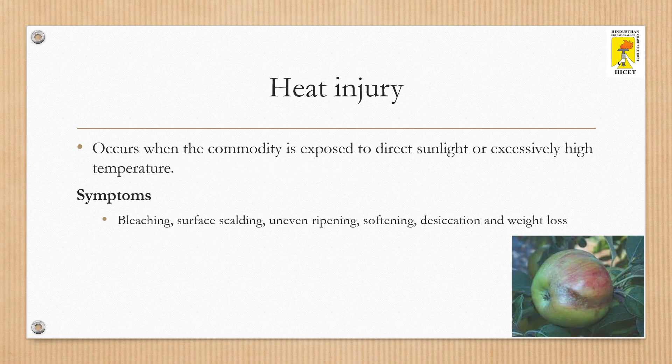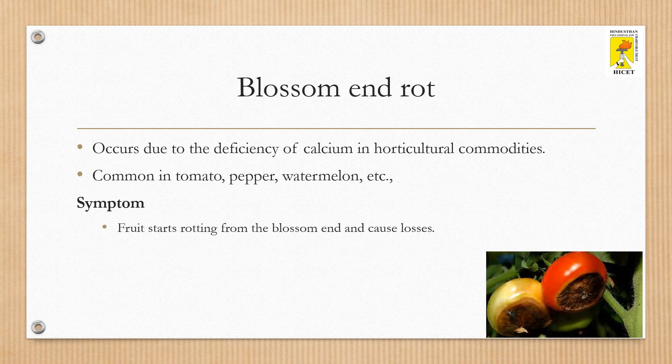Heat injury occurs when the commodity is exposed to direct sunlight or excessively high temperatures. Common symptoms of this injury are bleaching, surface burning or scalding, uneven ripening, softening, desiccation, and weight loss.